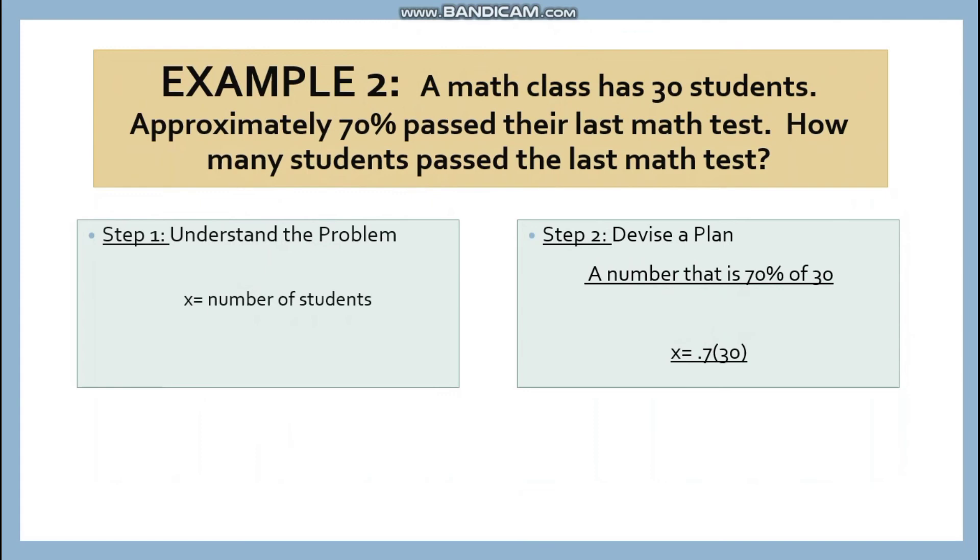Step 2, devise a plan. A number that is 70% of 30. Translate. X is 0.7 times 30. You know, what is 0.7? I-divide 70 over 100. And the answer is 0.7.